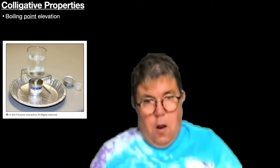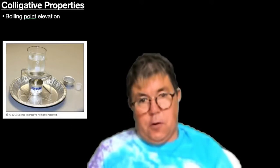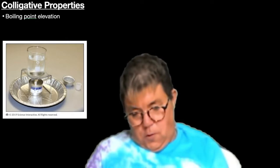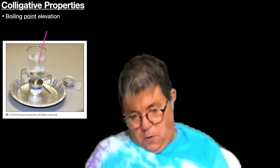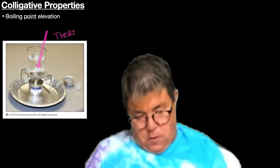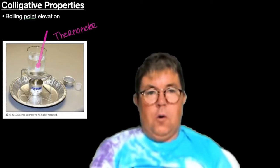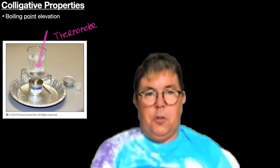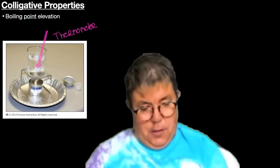Sitting on top is going to be a beaker of water. What is not shown sitting in that beaker of water is going to be — let's see if I can draw this — a thermometer, with a little bulb at the bottom. We can use the thermometer in order to measure the temperature of the water. We are going to heat the water up until boiling.